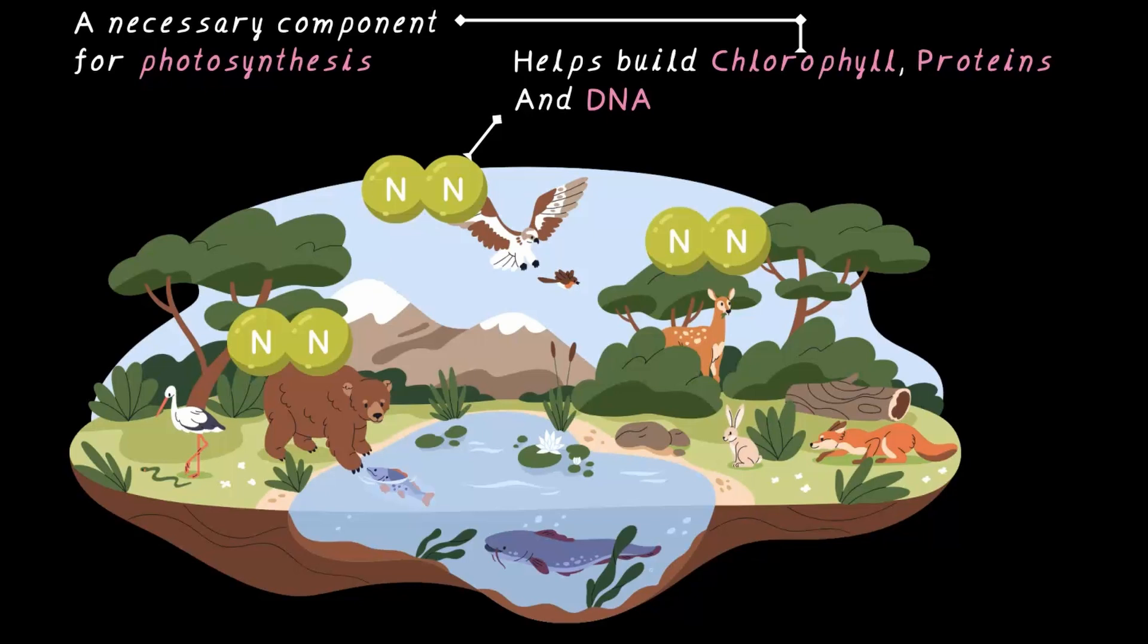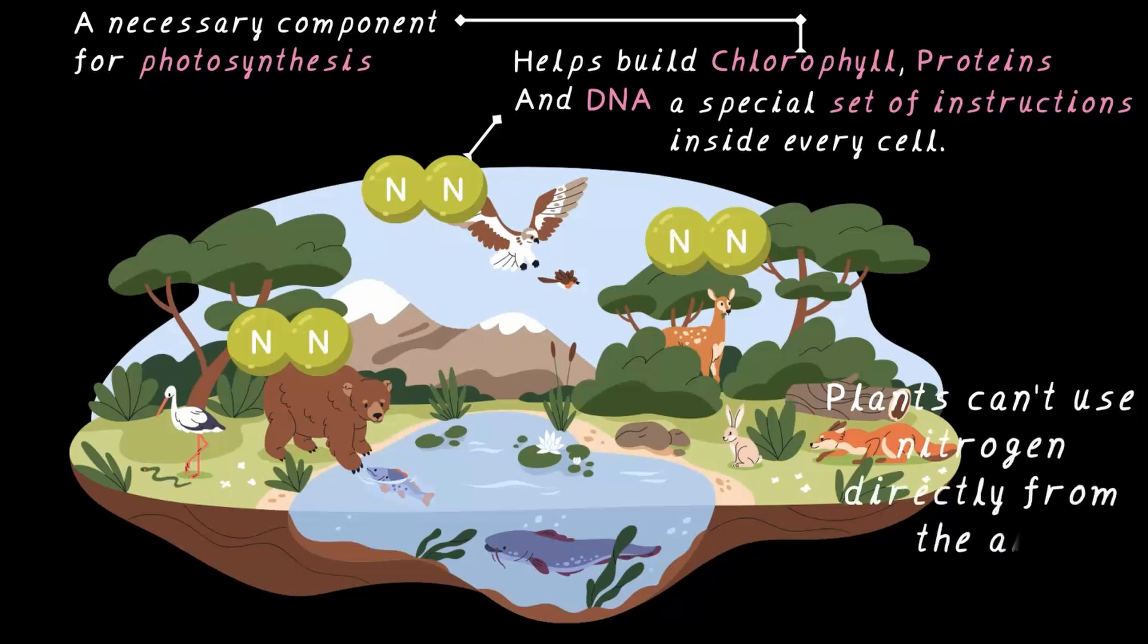And the DNA. DNA is a special set of instructions inside every cell on how the plant or animal should grow and function. Yes, that's how nitrogen is important for life. But remember what we talked about earlier. There is a huge problem. Plants can't just take nitrogen from the air, even though it's everywhere. So nature has a pretty cool way of solving this nitrogen problem.